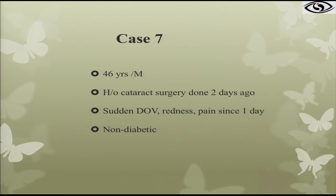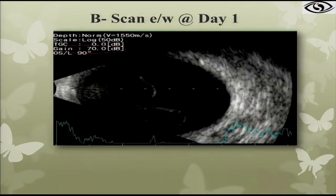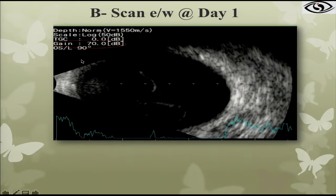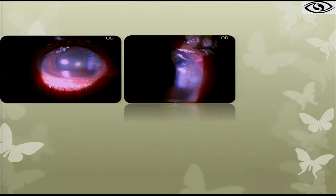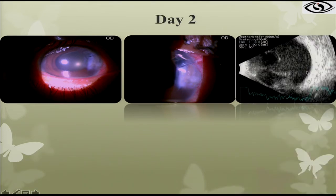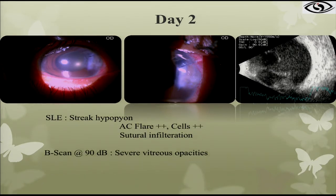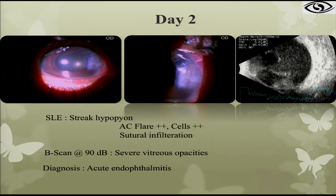Case 7: a non-diabetic patient with cataract surgery done two days ago with sudden diminution of vision. B-scan done elsewhere was again at 70 decibels showing minimal vitreous opacities, and the provisional diagnosis was TASS. When he presented to us, we noted sutural infiltration on slit lamp. B-scan repeated at high gain showed significant vitreous involvement. The lesson: perform B-scan at higher gain, and if you see sutural infiltration, do not have wishful thinking — accept it as infective and treat and refer accordingly.